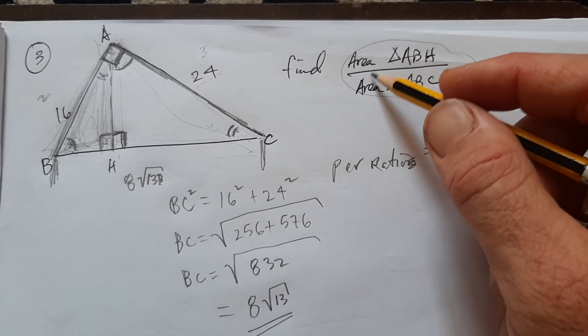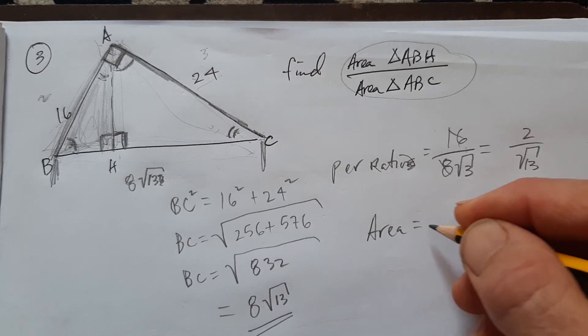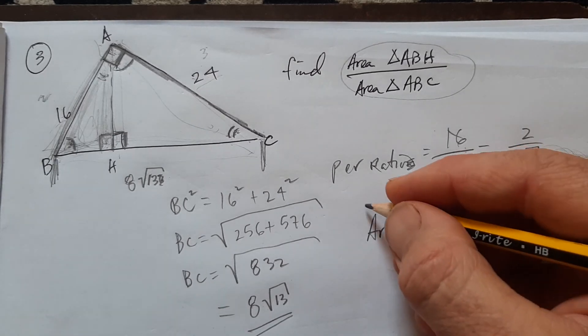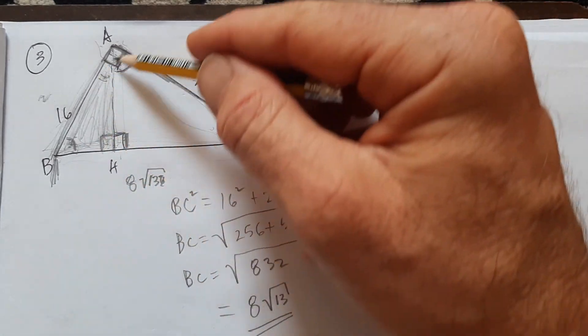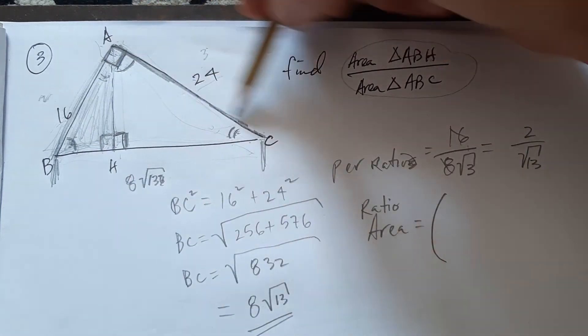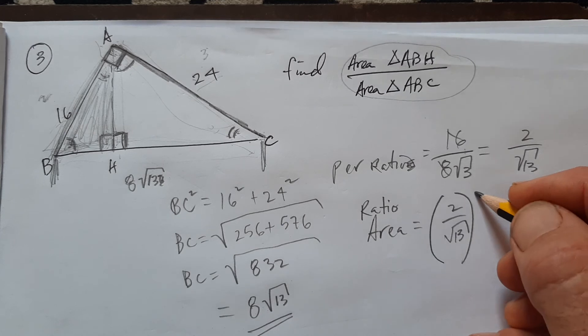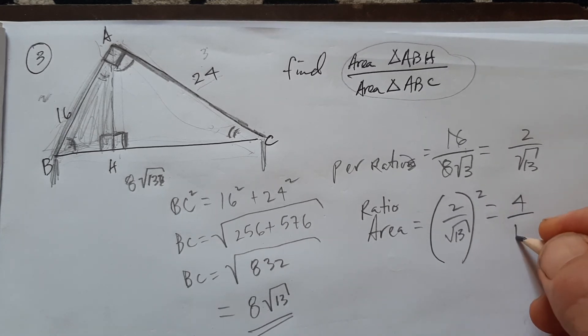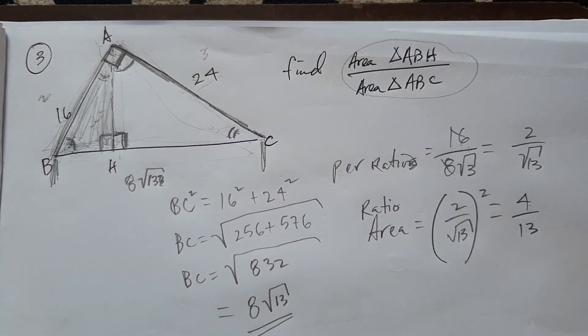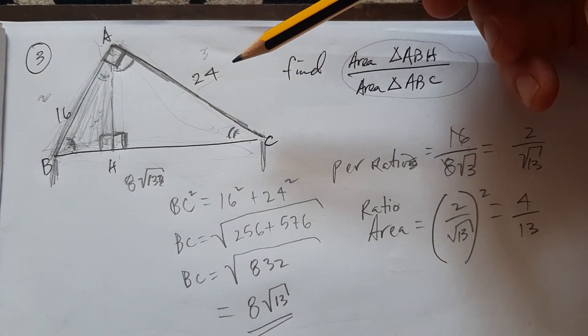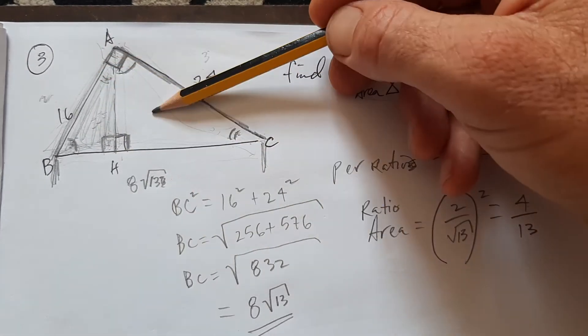But it makes it easier to find this area ratio. So the ratio of the areas, ratio of the area. So you're just wanting to find the ratio of the area of this triangle to the area of the big triangle. It's going to be 2 over the square root of 13 squared. So 4 over 13. So I guess this triangle is a little less than 3 times as small. If you blew this one up 3 times, you'd get the big triangle.